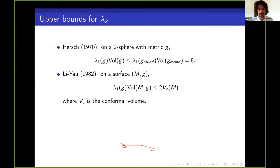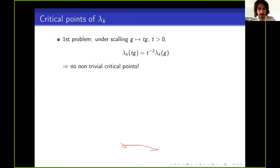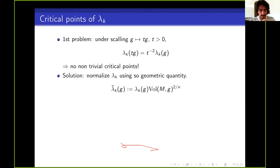One idea to find upper bounds is to consider lambda k as a function of the metric on the manifold and look at critical points of this function, hoping to find a global maximum. The first problem is that when you scale a metric by a constant t, the eigenvalue gets multiplied by t to the minus 2, so we get no non-trivial critical points. The simple solution is to normalize the eigenvalue by some geometrical quantity — for the Laplace eigenvalue, simply the volume of the manifold — multiplied to a correct exponent so we have something scaling-invariant. I'll denote the normalized eigenvalue with a bar above it.